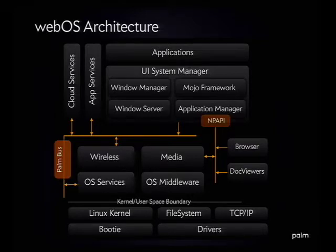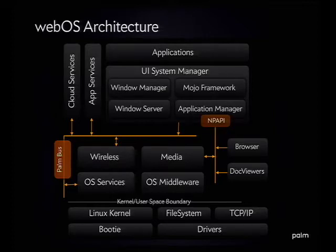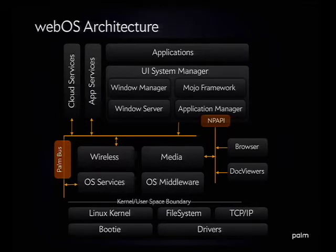On top of that is our window server, which is called Luna. Occasionally in the docs you'll see someone reference Luna — that's essentially the top half of the UI. It actually moves the windows around and contains the browsing core, the HTML rendering core, which is built on WebKit. Your applications can use the Mojo framework, which is entirely JavaScript-based. That's what gives you the common look and feel — all of the standard widgets that look the same in all applications, so your app feels like it belongs on the phone. And then above that is your actual app itself.